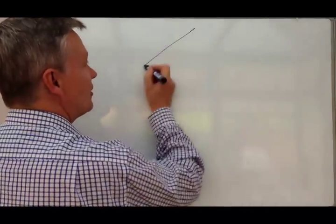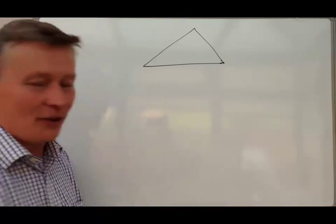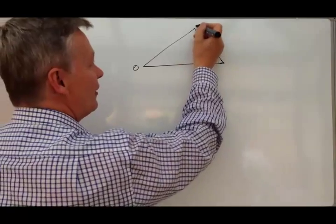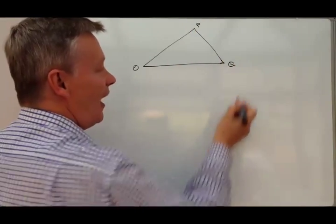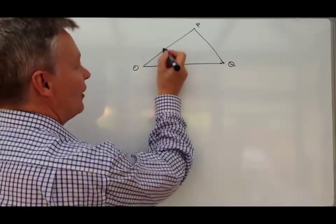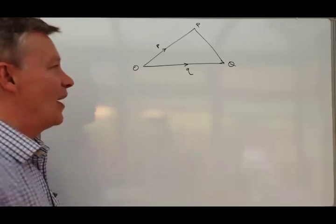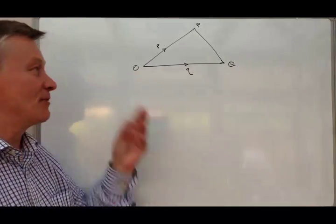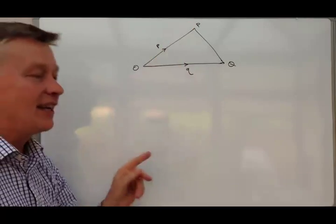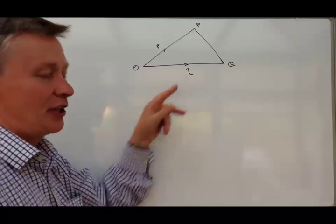This particular question concerns a triangle, and very typically with a lot of these questions they always use the same designation and say O, P, and Q. What we're told about this particular triangle is there is a vector P and a vector Q. Vector OP is vector P there and Q there.